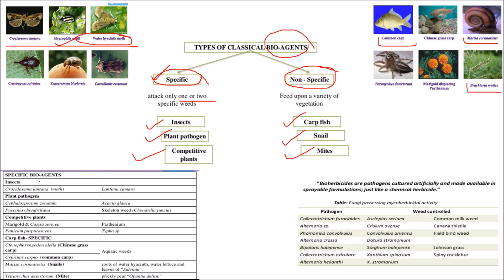Looking at specific biocontrol agent examples: for Lantana camara weed, we target a moth as the biocontrol insect. For acacia glauca and skeleton weed, we use the plant pathogens Puccinia and Cephalosporium. As competitive plants, for parthenium we use marigold and cassia as bioagents, and for typha we use Panicum. For aquatic weeds specifically, carp fish are used as biocontrol agents.